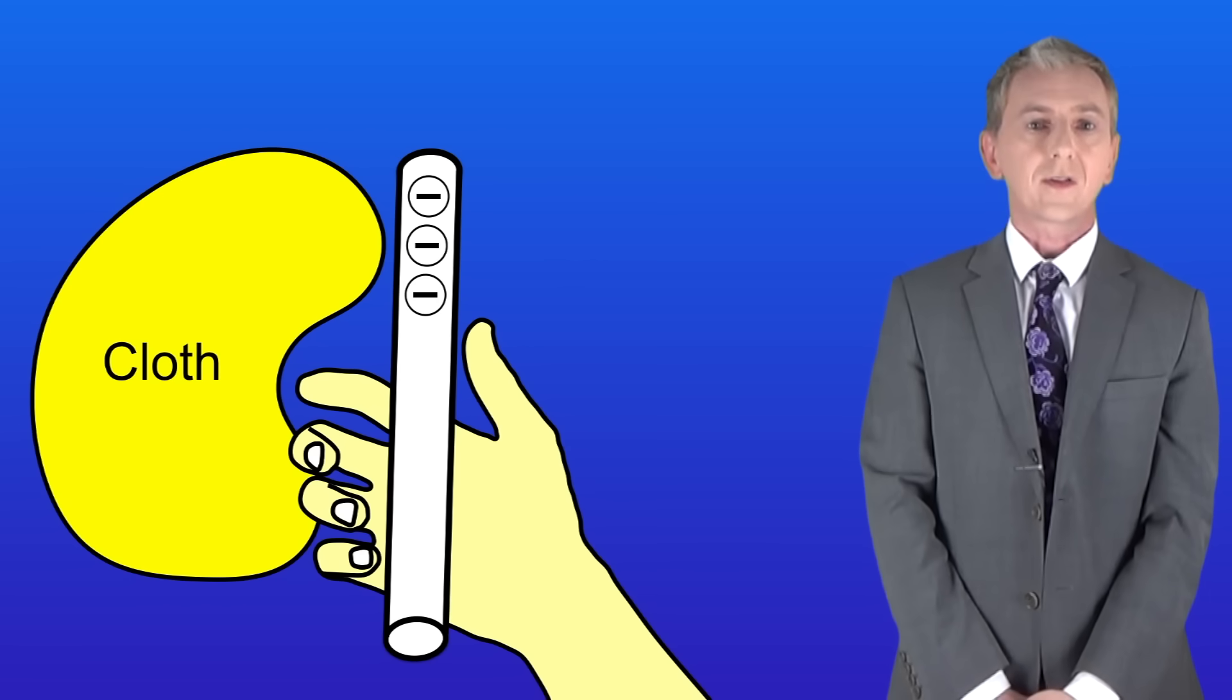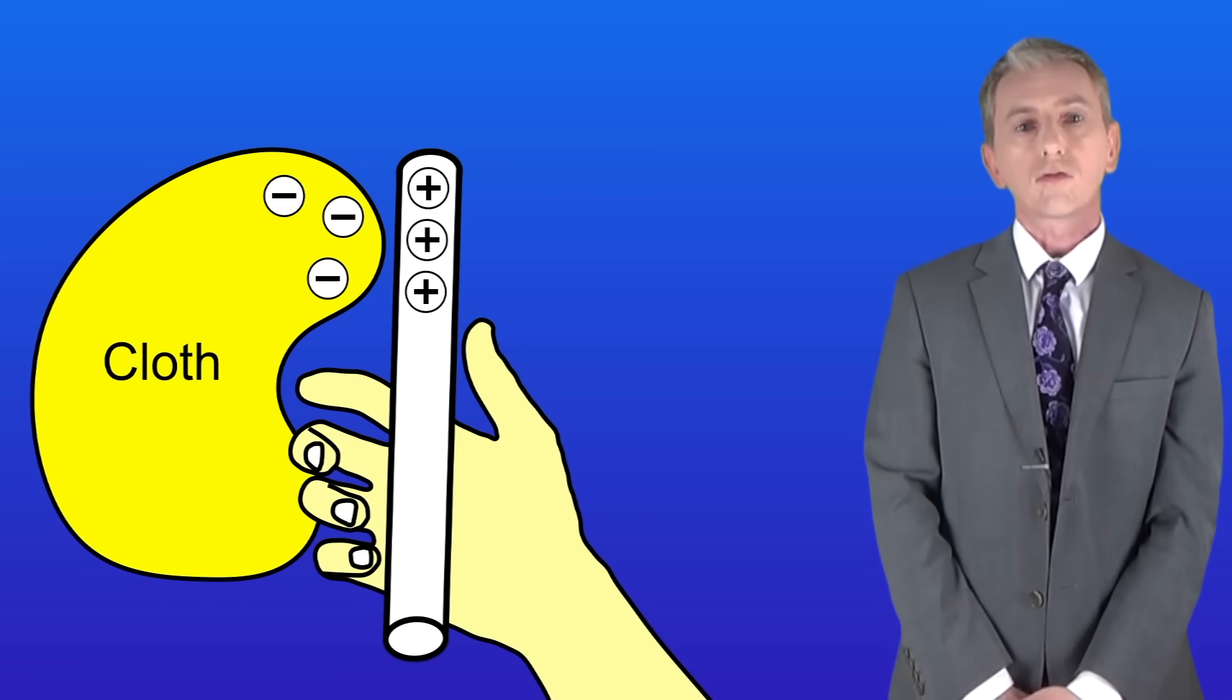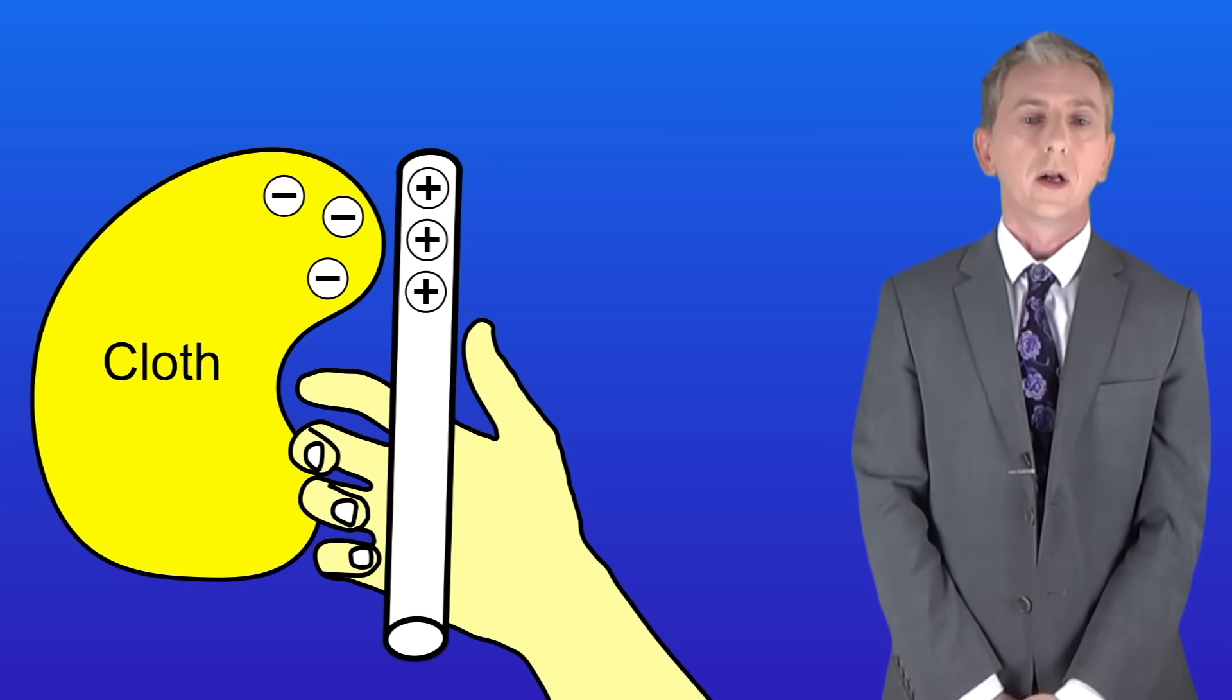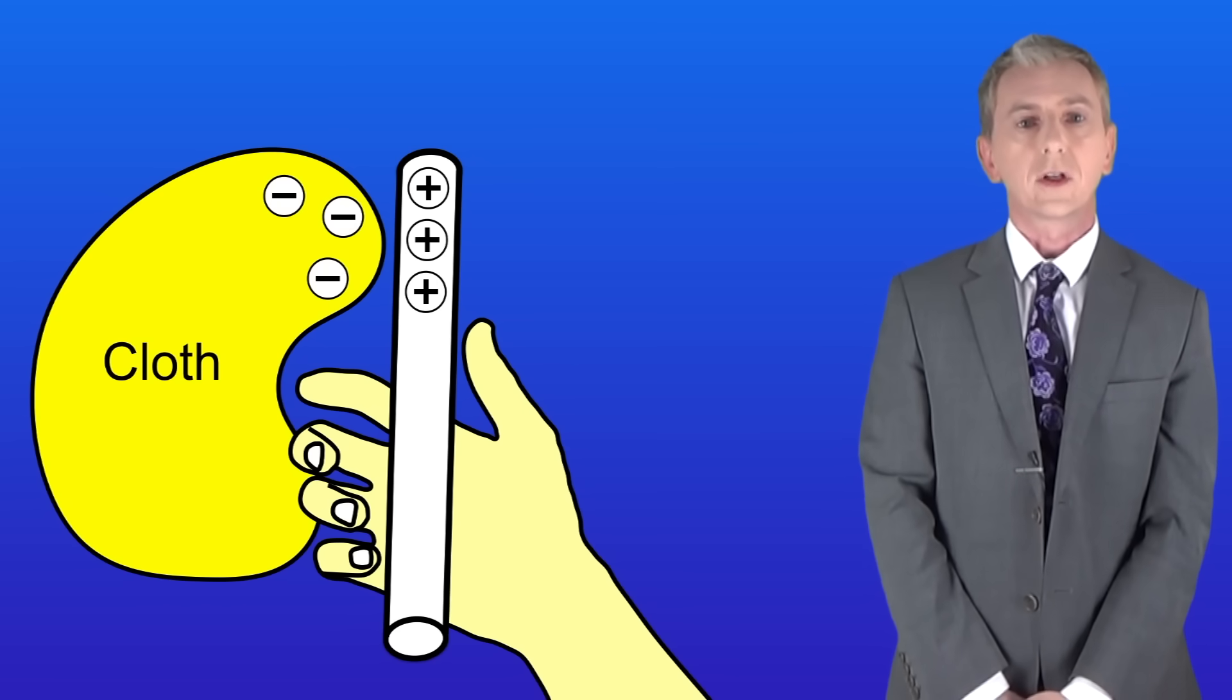When we rub the plastic with the cloth, electrons move from the plastic onto the cloth. Remember that electrons are negatively charged.